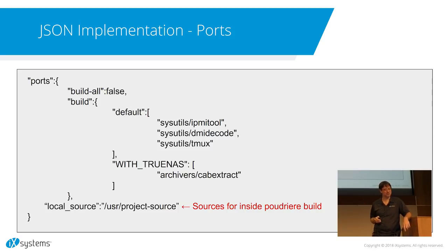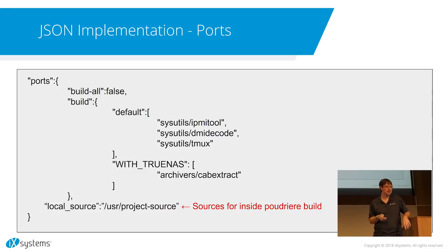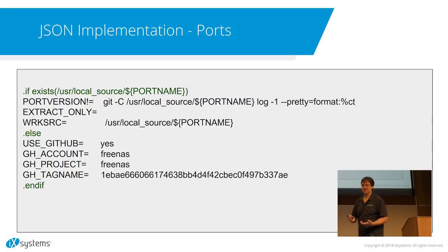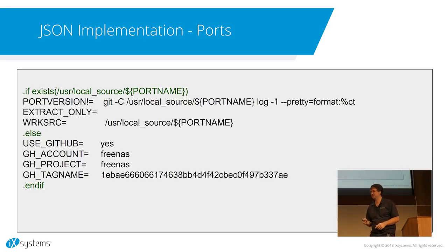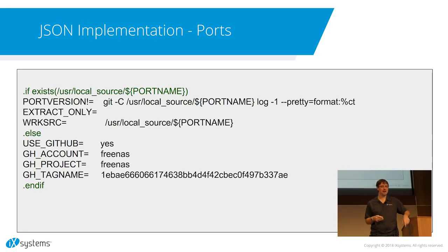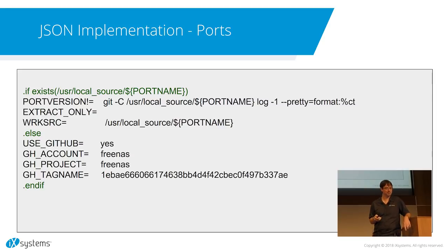We did something different for FreeNAS. Most FreeNAS developers want to hack on their laptop and test things before pushing anything public. So we added a directive called local source, where you can have a local directory of all your different GitHub repos checked out. That gets passed through to the Poudrière job at build time. In the port itself, if a local source exists that matches the port name, it'll check it out from there, change the version number, etc. Otherwise it fetches from GitHub from whatever the last known tag was.